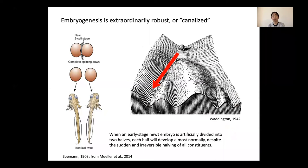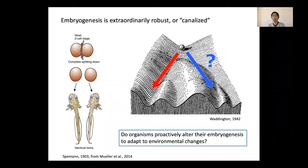The process of embryogenesis has long been known for its amazing robustness. For example, when a newt embryo is divided into two halves, each half will still develop almost normally despite the irreversible halving of the constituent. Such a developmental process is often compared to a canal which always follows a fixed route. However, it's certainly unknown whether and if so how the embryo changes its developmental programs — in other words, chooses a different canal in response to environmental factors.